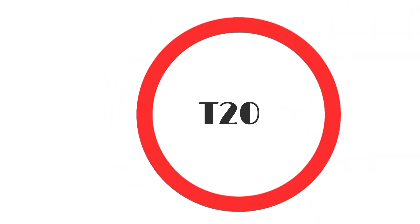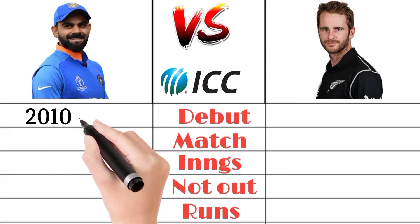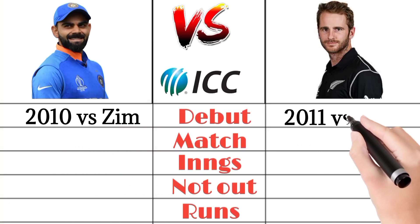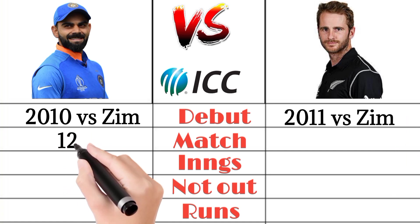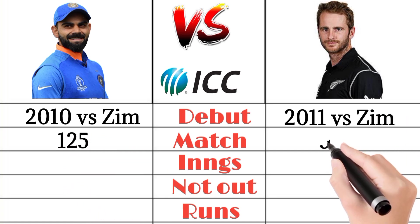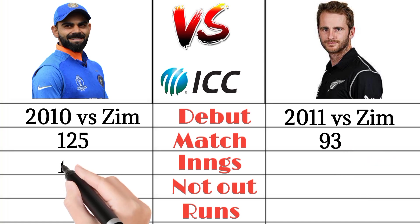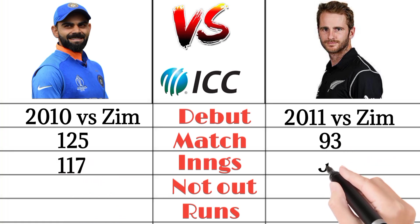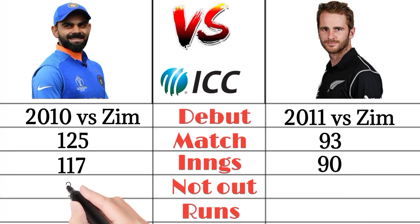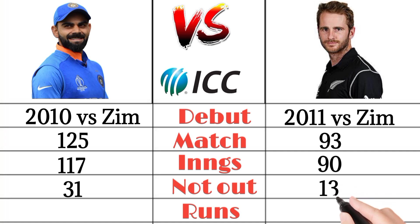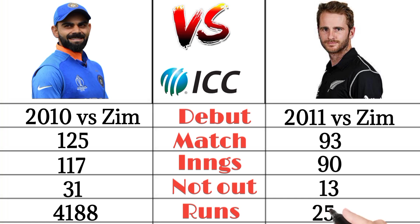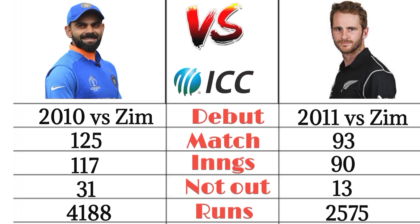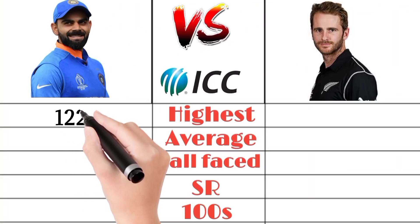T20 comparison. Virat Kohli's T20 debut was in 2010 vs Zimbabwe and Kane Williamson's T20 debut was in 2011 vs Zimbabwe. Virat Kohli has played 125 T20 matches and Kane Williamson 93 matches. Virat Kohli played 117 innings and Kane Williamson 91 innings. Virat Kohli was 31 times not out and Kane Williamson 13 times not out. Virat Kohli scored 4188 runs in T20s and Kane Williamson scored 2575 runs.